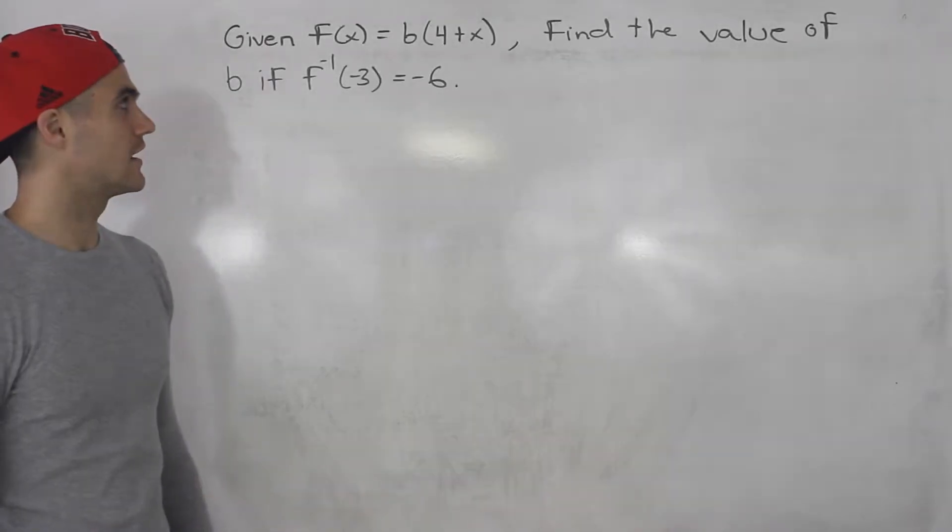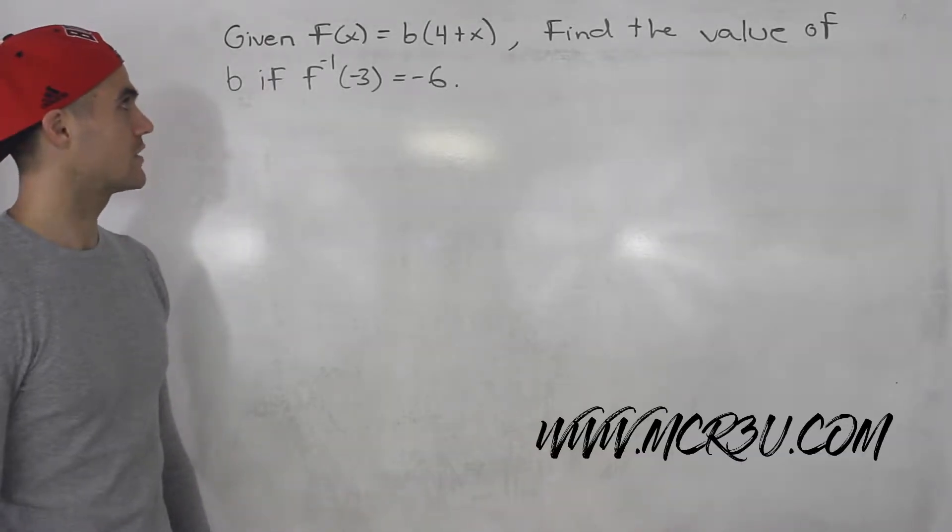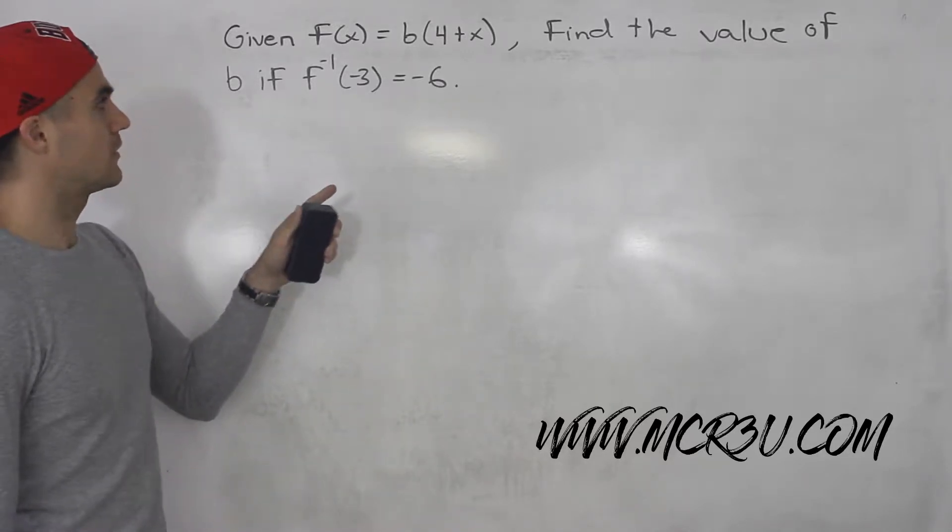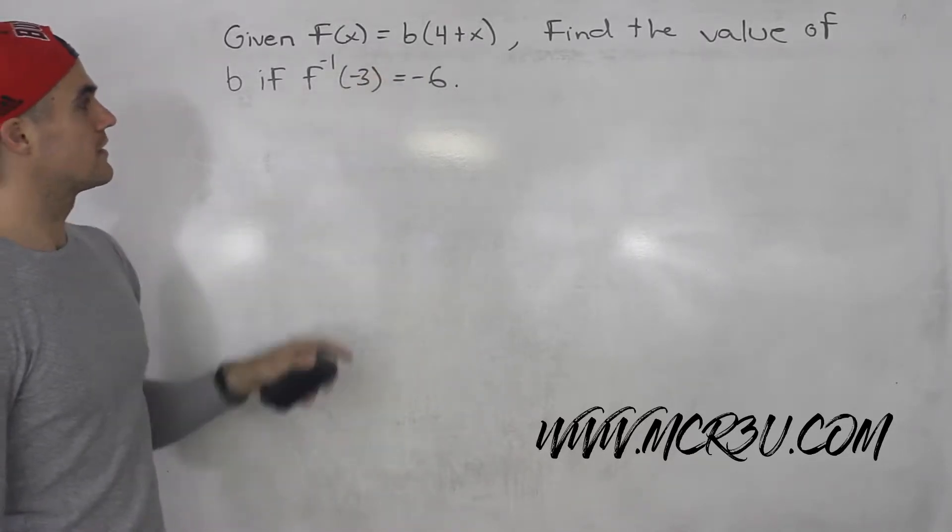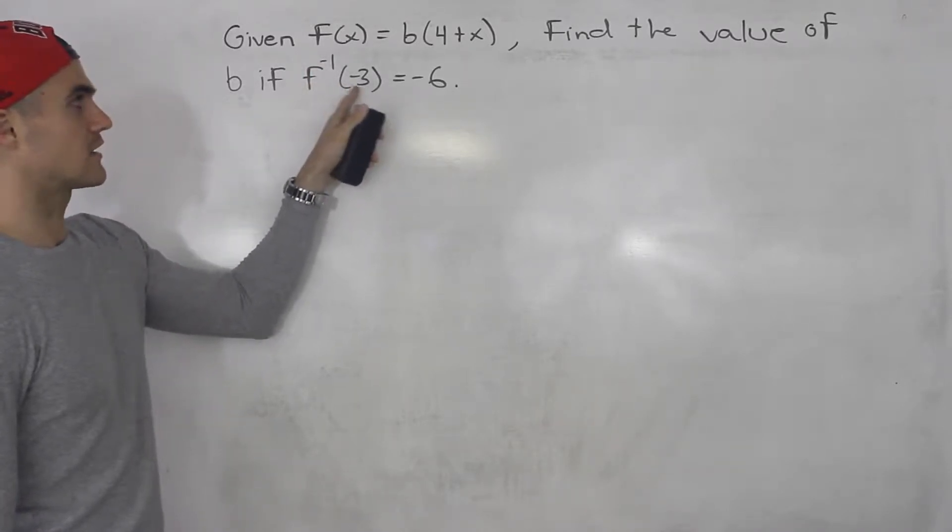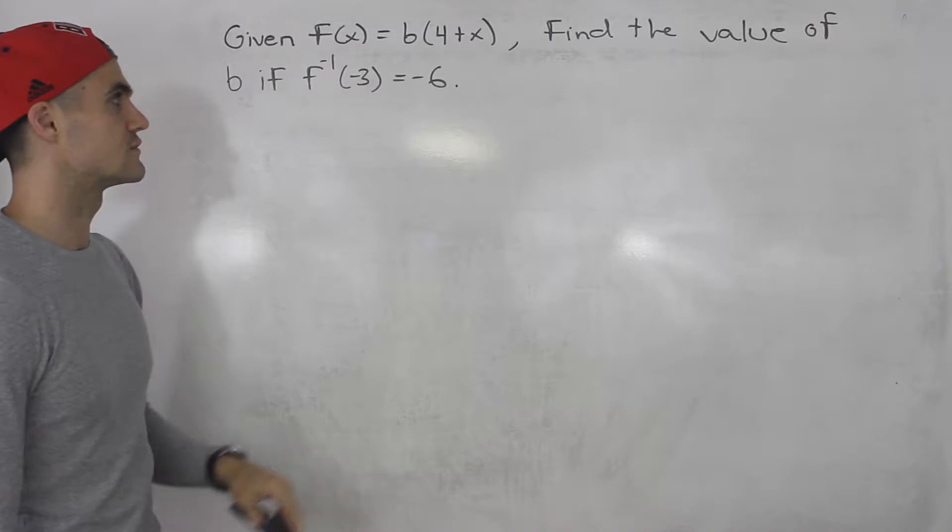What's up guys, Patrick here. In this question we're given f(x) equals b(4 + x), and we have to find the value of b if the inverse of this function at (-3) is equal to -6.